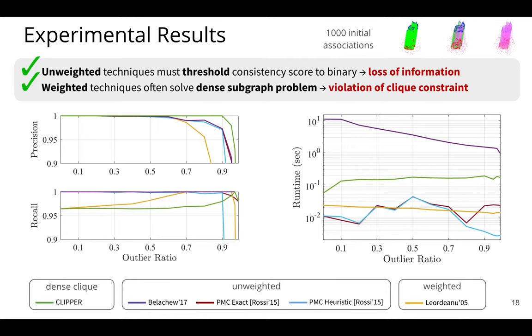So the next point is showing how these weighted algorithms violate the clique constraint. And we are using here Liordano as a representative of this class. And this Liordano algorithm uses some spectral relaxations and effectively throws away the clique constraint. And we see that it really starts to struggle rather quickly in these higher outlier regime cases. So CLIPPER is able to maintain high precision over the competing algorithms by maintaining information and by also maintaining this clique constraint.